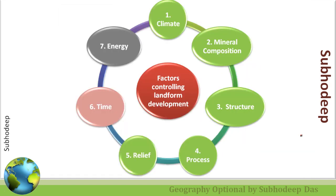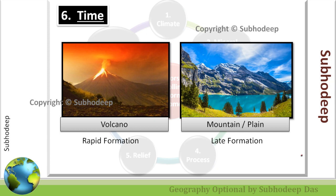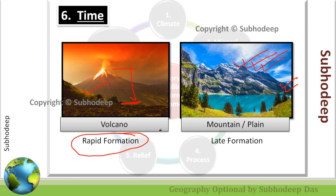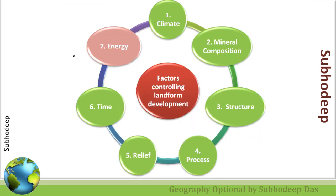The next factor is time. A volcanic mountain can occur within a time span of 10 to 20 years — if volcanic material is coming out every year, within 10 to 20 years a huge mountain can form. But a folded mountain has taken thousands, lakhs, even millions of years to form. So in geographical time span, the volcanic mountain forms much more rapidly than the folded mountain. That's why time also plays a major factor in the formation of landforms.